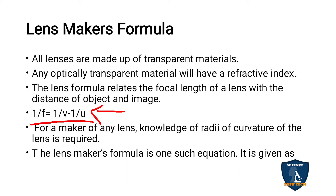If you go to a doctor because of a sight defect, they will test your sight with the help of lenses. Based on the test, your power may be minus 1 or minus 2, and they have to make the lens accordingly. At the optical shop, an optometrist will make the lens based on the Lensmaker's Formula.